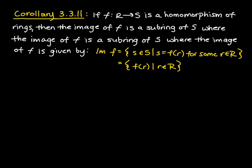The last thing I want to note is just this corollary, and we'll provide it without proof. So if f from R to S is a homomorphism of rings, then the image of f is a subring of S. And we define the image of f as the set of all s in S such that s is equal to f of r for some r in R.